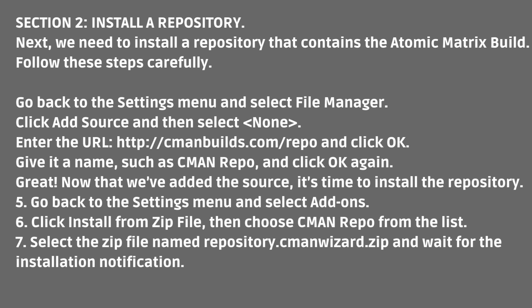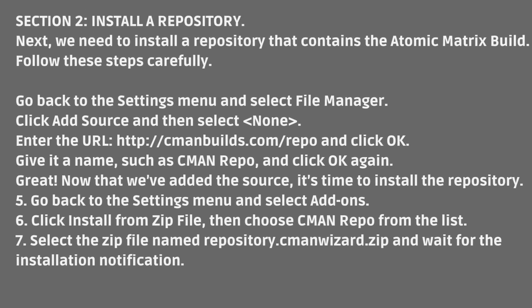Great! Now that we've added the source, it's time to install the repository. Go back to the settings menu and select Add-ons. Click Install from Zip File, then choose Kman Repo from the list. Select the zip file named Repository.CmanWizard.zip and wait for the installation notification.